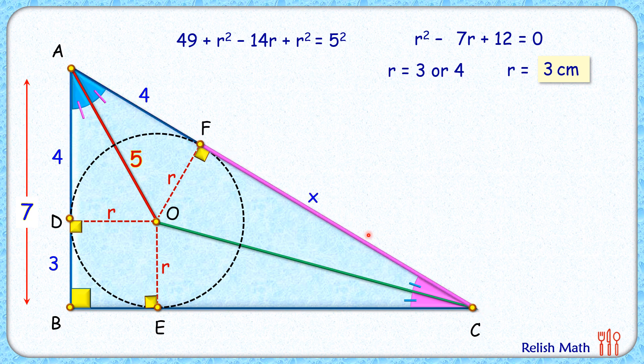Let's assume the length CF is x centimeters. Now again, from external point C, two tangents are drawn, CF and CE. They will be equal in length, so it will be x centimeters. How about this length BE? BE length will be the same as BD length, or 3 centimeters.